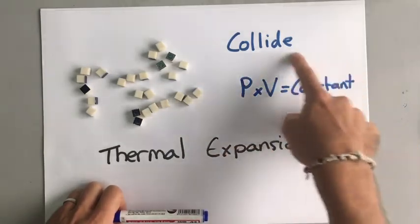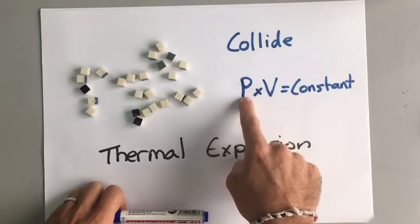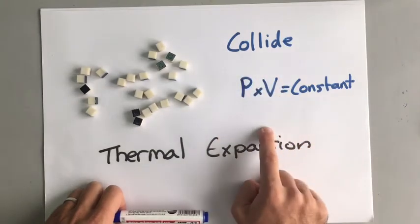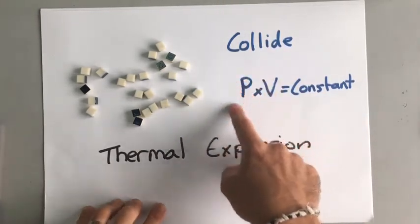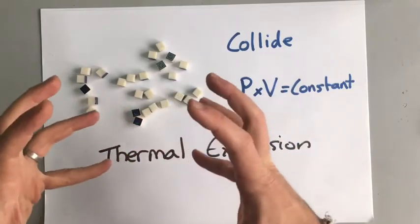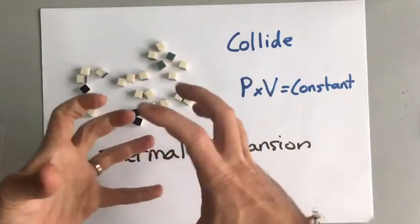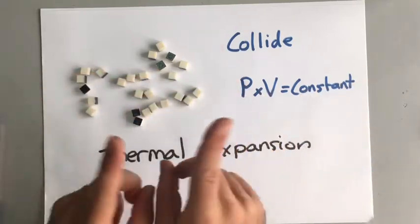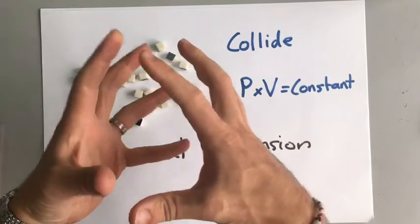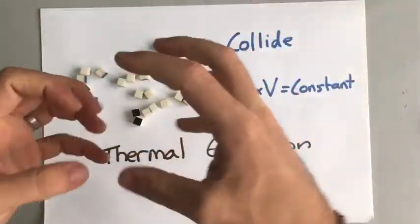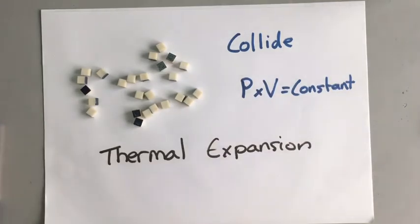At a constant temperature, pressure times volume is always the same number. So if you double the pressure you halve the volume, and if you double the volume you halve the pressure. You can imagine this with a balloon: if you squeeze it to half the volume, the pressure inside increases and it gets harder and harder. The smaller the volume, the higher the pressure. If you stretched it out, the pressure on the inside would be lower and lower. If you increase pressure you decrease volume, and the other way around.